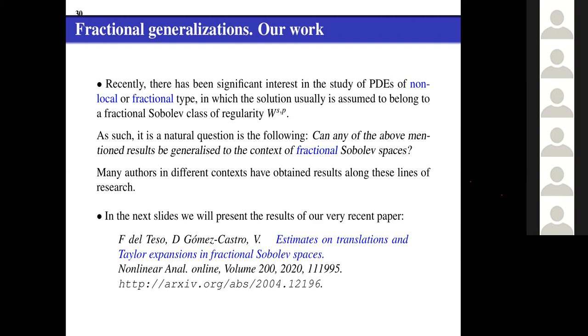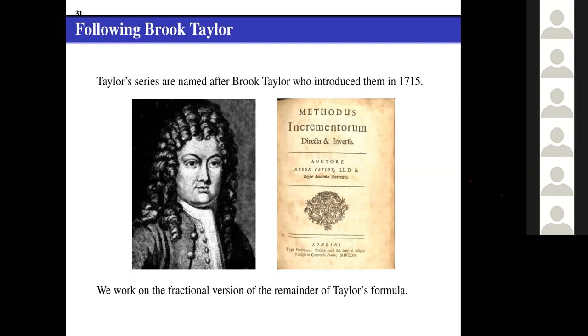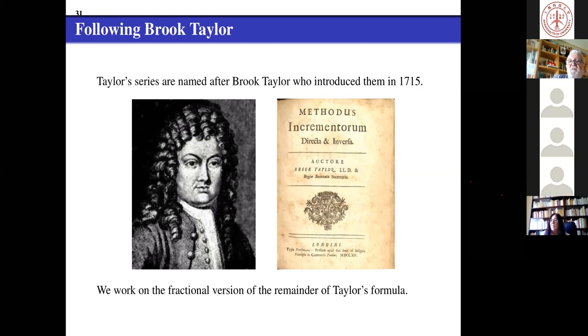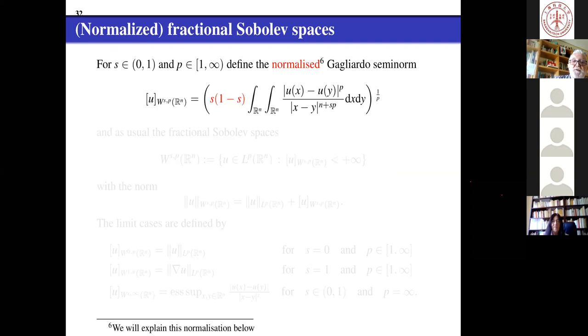Let me just do some philosophy. Taylor series, his name or the collection of Taylor series are named after Brooke Taylor who introduced them in 1715 and they were known partially before thanks to the work of Newton and Colin and Gregory, the British school. What we want to do now is follow the leader and do a version of the fractional remainder of Taylor's formula. This is it, first you need to introduce what is your control norm and it's the semi-norm, the Gallardo semi-norm so it's very classical. Now you define the fractional spaces.